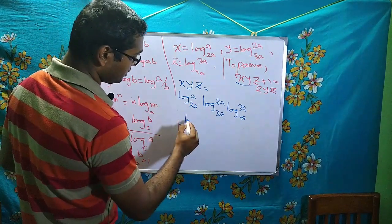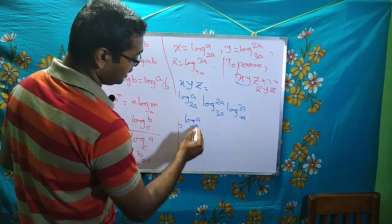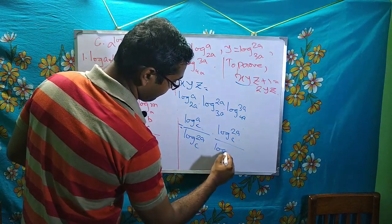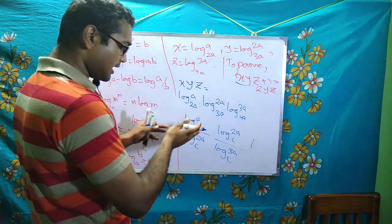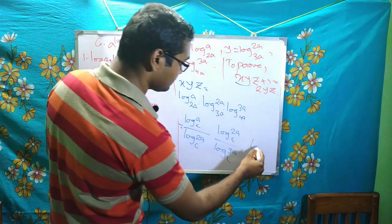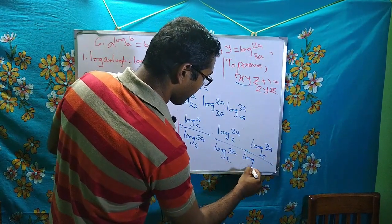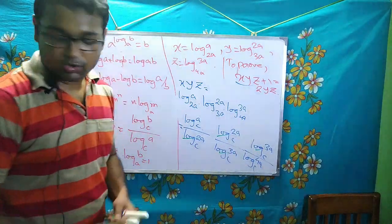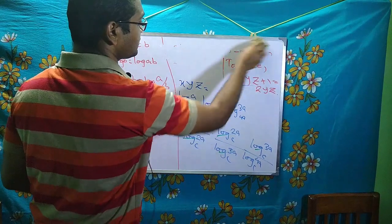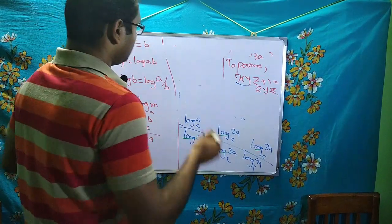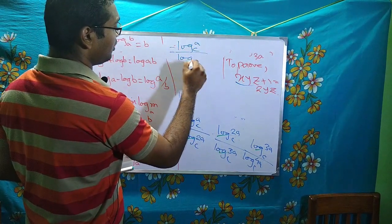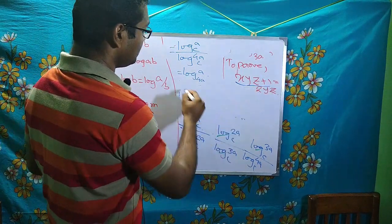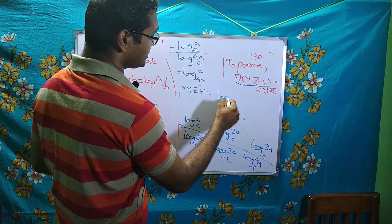Using the change of base formula: xyz equals [log a to base c / log 2a to base c] times [log 2a to base c / log 3a to base c] times [log 3a to base c / log 4a to base c]. The intermediate terms cancel, leaving log a to base c divided by log 4a to base c, which equals log a to the base 4a. Now I need to find yz. Y times z equals log 2a to base c / log 3a to base c times log 3a to base c / log 4a to base c. The log 3a terms cancel, leaving log 2a to base c divided by log 4a to base c, which equals log 2a to the base 4a.